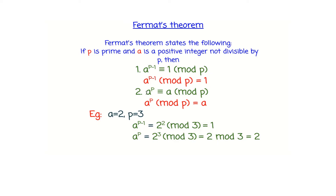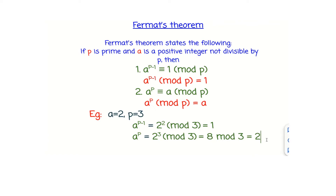The second condition is: A raised to P is equal to A mod P, or equivalently, A raised to P mod P is equal to A. Using the same example, A is 2 and P is 3: 2 raised to 3, mod 3. So 2 raised to 3 is 8. 8 divided by 3 gives a remainder of 2, which equals A.